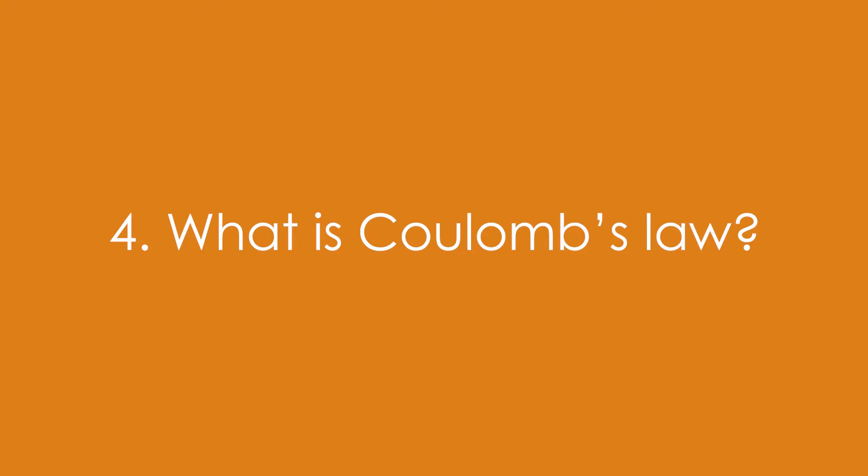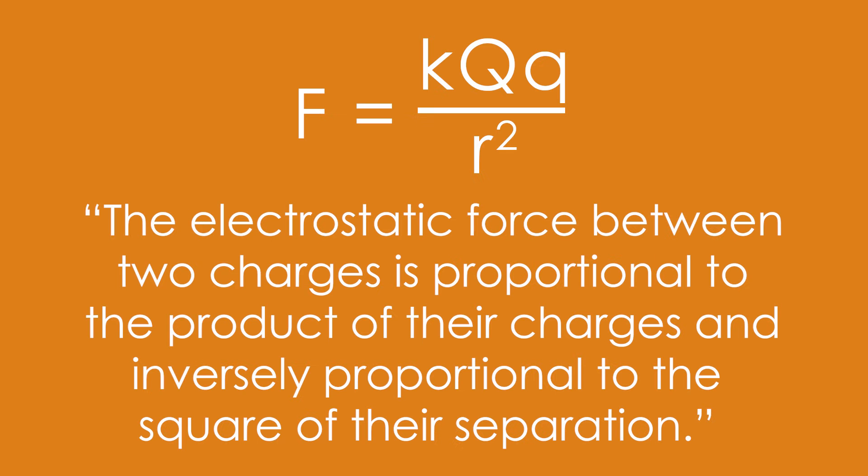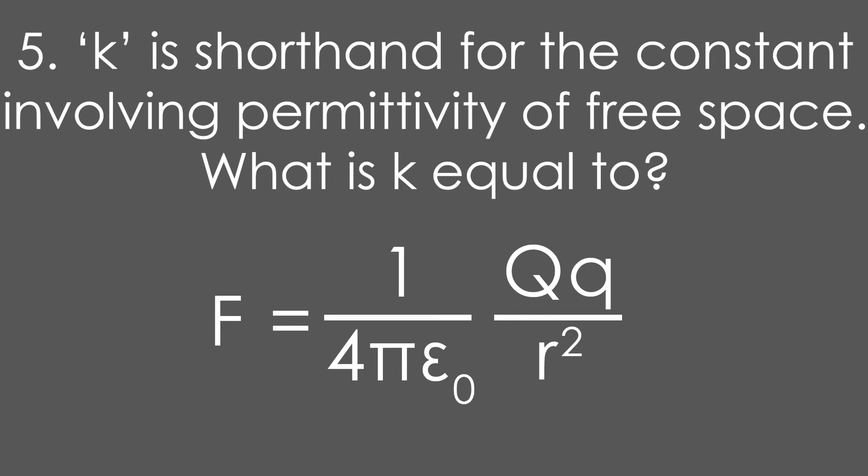Similarly four, what is Coulomb's law? F equals kQq over r squared. In words, the electrostatic force between two charges is proportional to the product of their charges and inversely proportional to the square of their separation. If you don't know that version of the equation, five, k is the shorthand for the constant involving permittivity of free space. It's 1 over 4π epsilon zero.